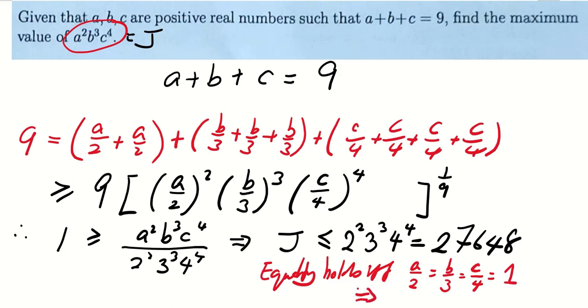And therefore, this is equivalent to say that the value of A, B, C is equal to 2, 3, 4 respectively. Therefore, we confirm that the value 27648 indeed is the maximum value of J. That's all for today's lesson. I'll see you again next time. Bye-bye.